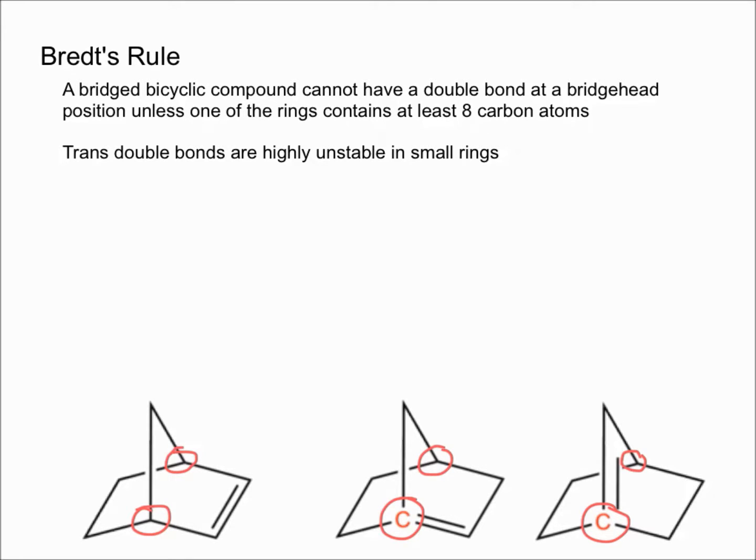If you look down below, I've circled the carbons in red. So that carbon right there, that carbon there, those carbons are all carbons at a bridgehead position.